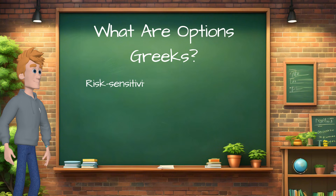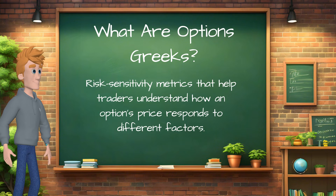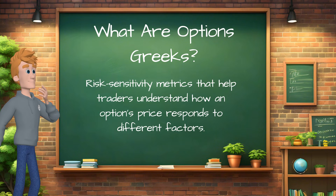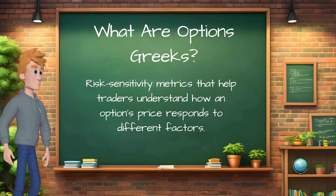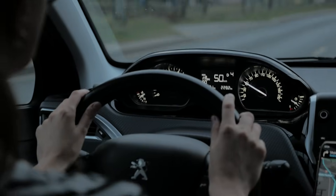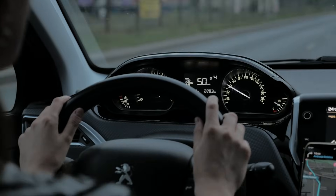Option Greeks are pieces of information that help traders understand how different factors affect the options price. Imagine them as the indicators on your car's dashboard. Sure, you can start the car and drive off without ever looking at the dashboard, but who would do such a thing? Unfortunately, when it comes to options trading, many of us ignore our figurative dashboard, or some of you may not even know that one exists.